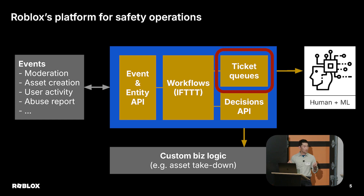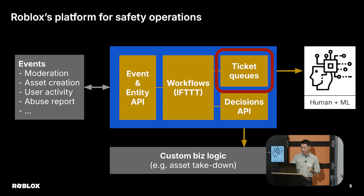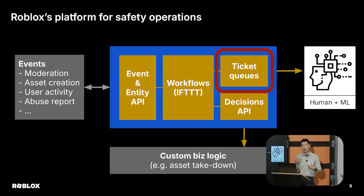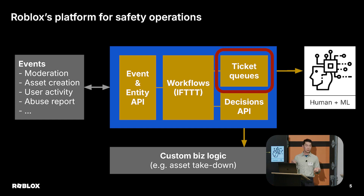Or we learn about new user activities that make us want to re-evaluate certain things given new understanding of user suspiciousness. These things go into the safety platform, and the important part is that the ticket queues go into actual review. This started off as mostly human review, and then as we automated a lot with ML workers doing many reviews, it invokes custom business logic depending on what feature teams want to do.